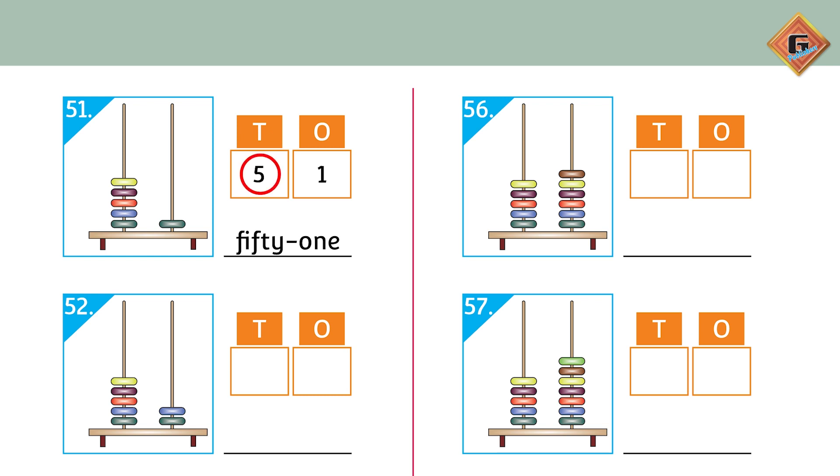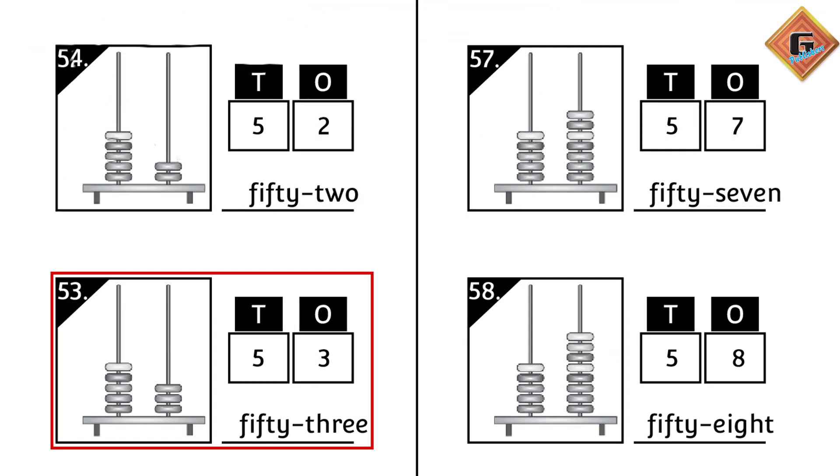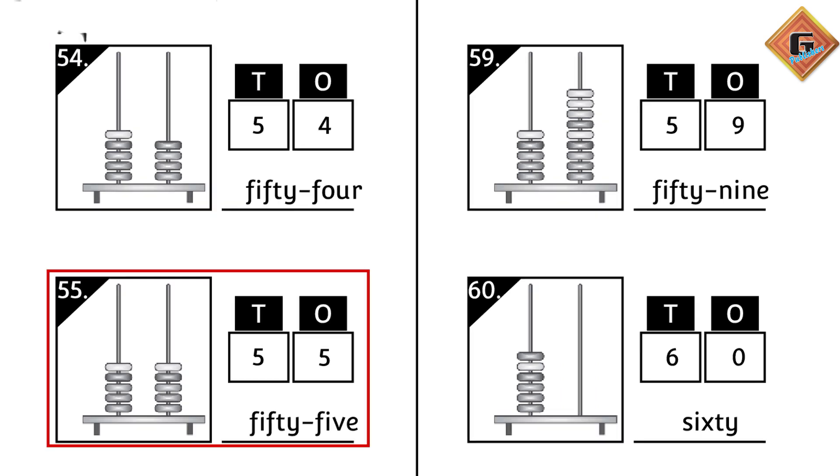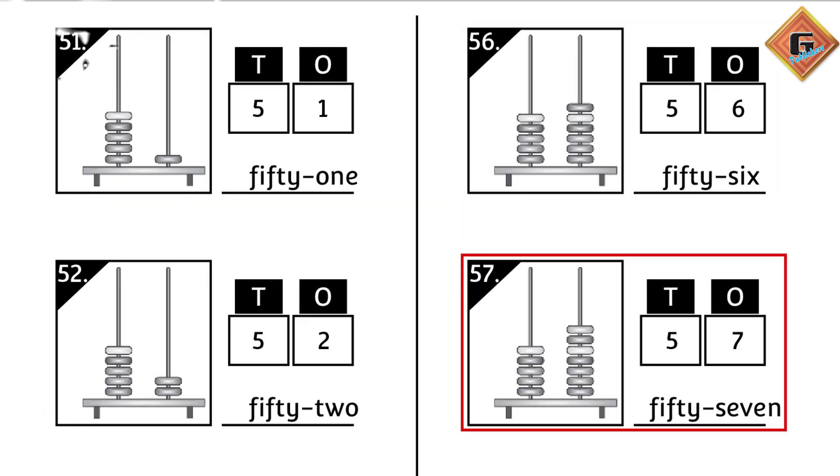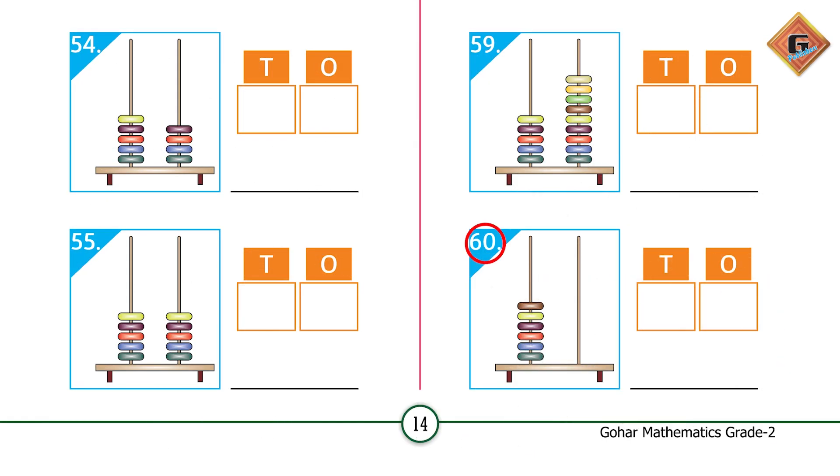We write one under ones and five under tens, and the number name is 51. Keep on doing it: 52, 53, 54, 55, 56, 57, 58, 59, and 60.